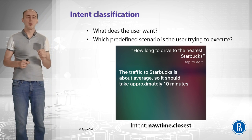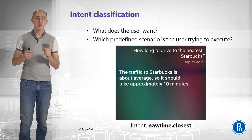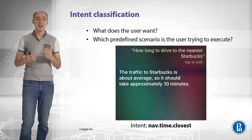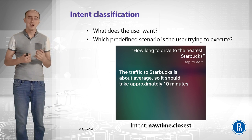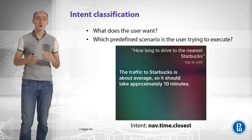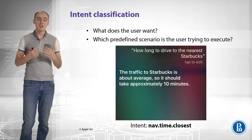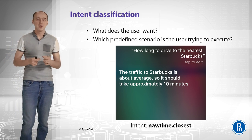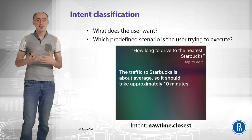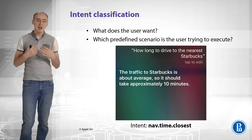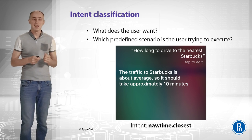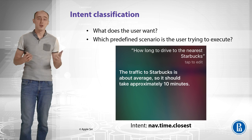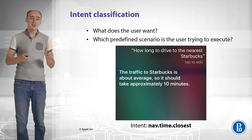You should think of intent classification as: which predefined scenario is the user trying to execute? Let's look at this Siri example: 'How long to drive to the nearest Starbucks?' Siri tells me the result: 'The traffic to Starbucks is about average, so it should take approximately 10 minutes.' I had a certain intent — I wanted to know how long to drive to the nearest Starbucks — and we can mark it up as the intent 'navigation_time_closest.' I can ask it in any other way, because natural language has many options, but we still need to understand it is the same intent.